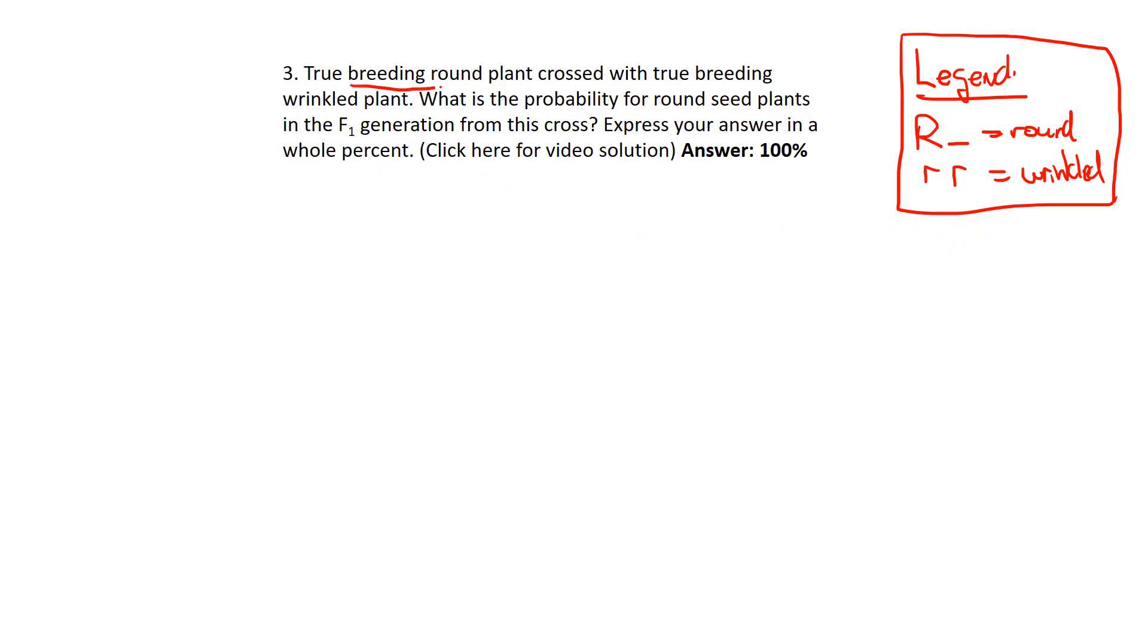It says a true breeding round plant is crossed with a true breeding wrinkled plant. If you remember the terminology from the first part of this unit, when we talked about true or pure breeding, what that means is homozygous.